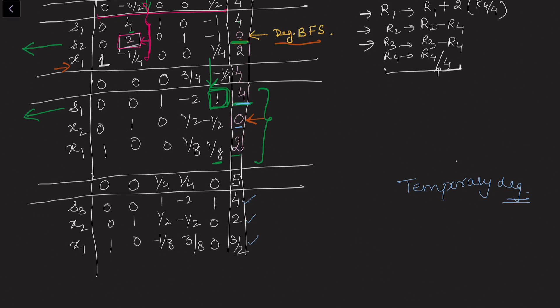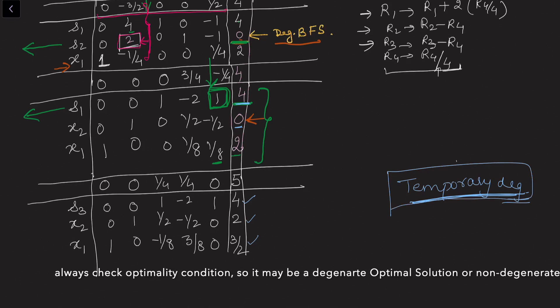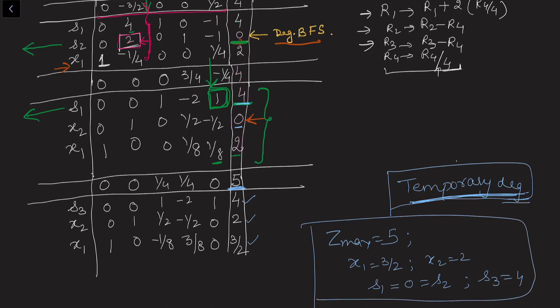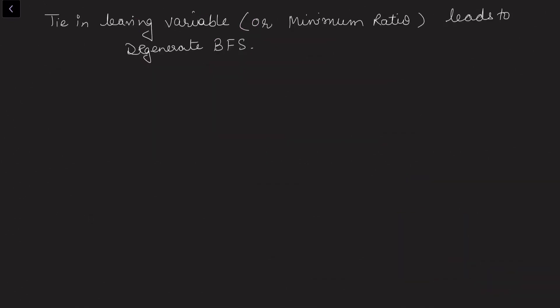This was a case of temporary degeneracy. There are other types such as permanent degeneracy and cyclic degeneracy, which will be discussed in the next video. To summarize: the tie in the leaving variable — the minimum ratio rule — leads to a degenerate basic feasible solution. By breaking the tie correctly, we obtained the optimal solution z maximum = 5, with x1 = 3/2, x2 = 2, s2 = 0 (non-basic), and s3 = 4. This is a non-degenerate optimal solution.